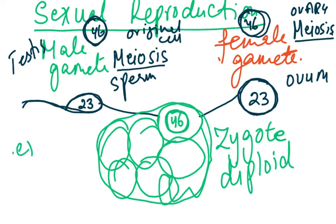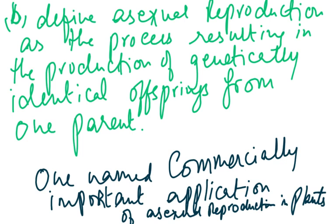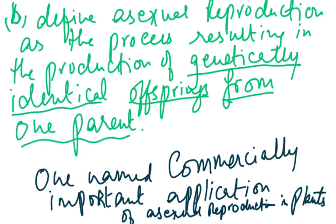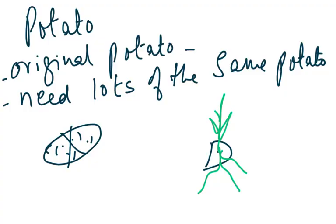Asexual reproduction is defined as the process resulting in the production of genetically identical offspring from one parent. The syllabus also requires describing one named commercially important application of asexual reproduction in plants.